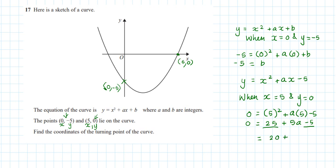20 plus 5a equals 0, so I subtract 20 from both sides. So I've got -20 equals 5a, and I divide both sides by 5 to give me a equals -4.